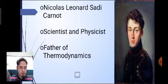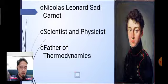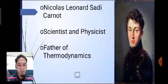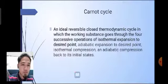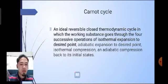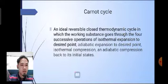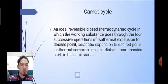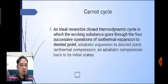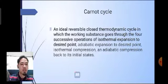Newcomen had taken ideas from the engine of Thomas Savery and Papin's pressure cooker. The idea of the pressure cooker was given by Papin, with the suggestion that in a pressurized vessel the cooking is faster. The Carnot cycle is an ideally reversible thermodynamic cycle in which the working substance goes through four successive operations: isothermal expansion, adiabatic expansion to a desired point, isothermal compression, and adiabatic compression back to its initial state.